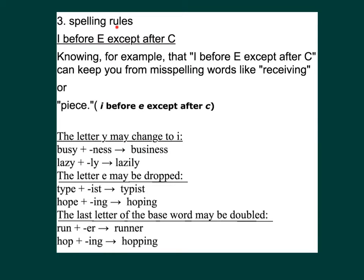Number three: spelling rules. 'I before E except after C.' Knowing this rule can keep you from misspelling words like 'receiving' (R-E-C-E-I-V-I-N-G) or 'piece' (P-I-E-C-E) — I before E except after C.